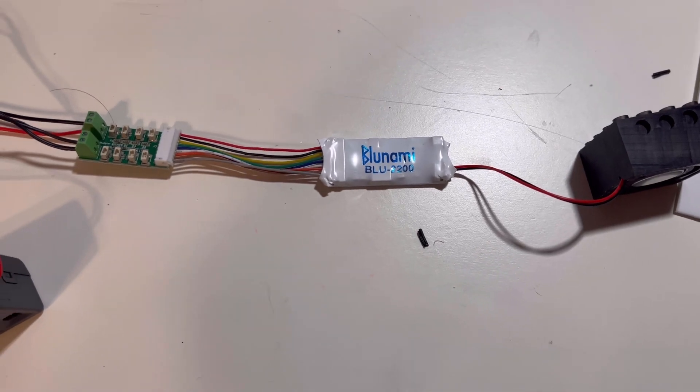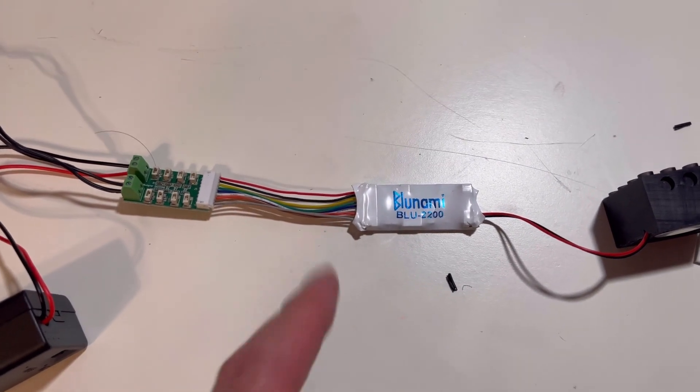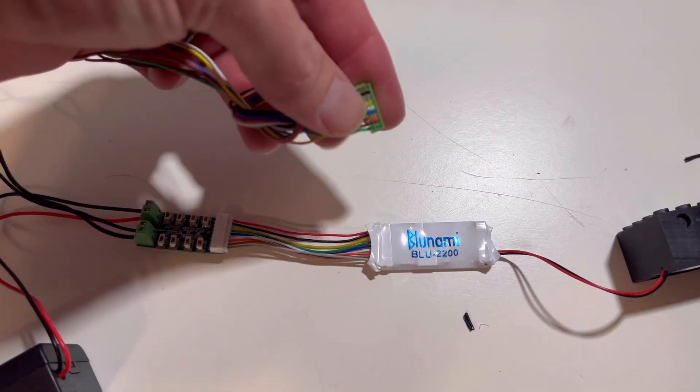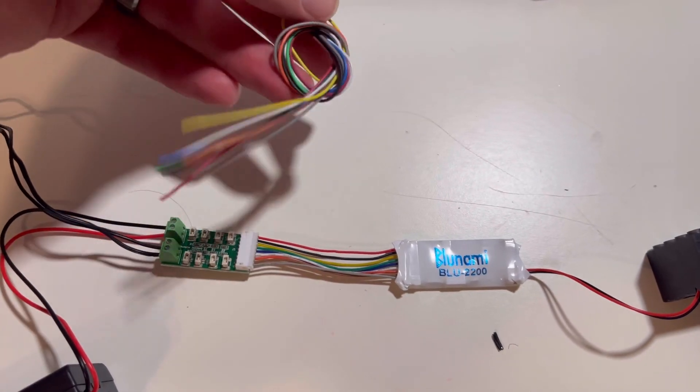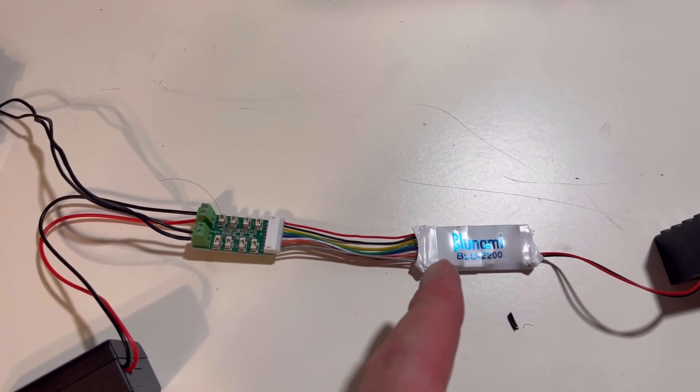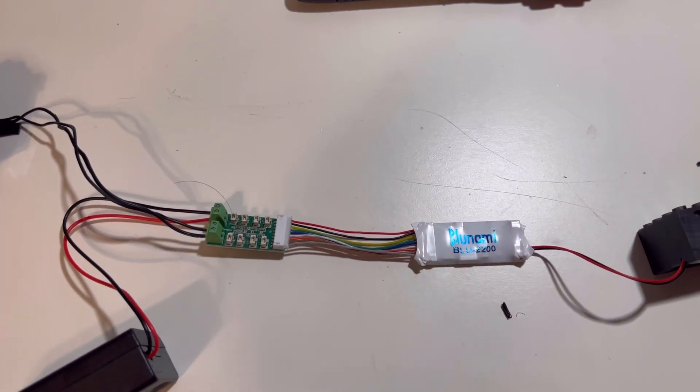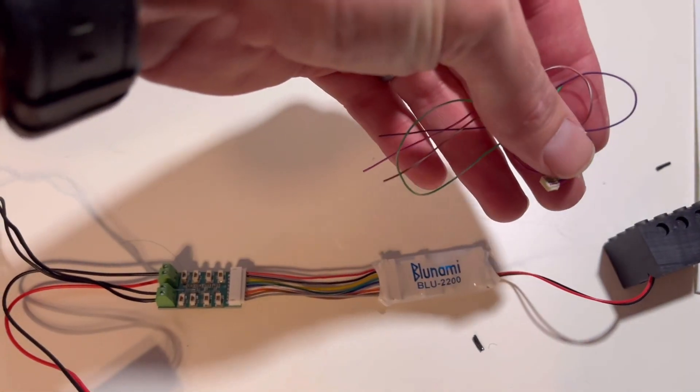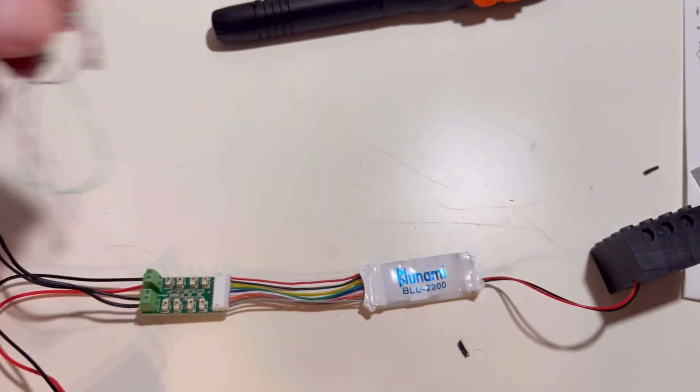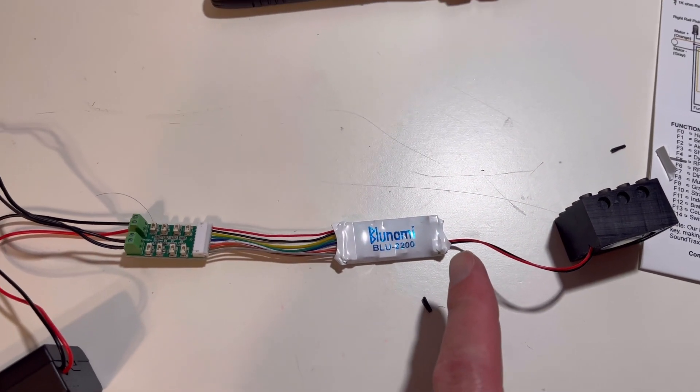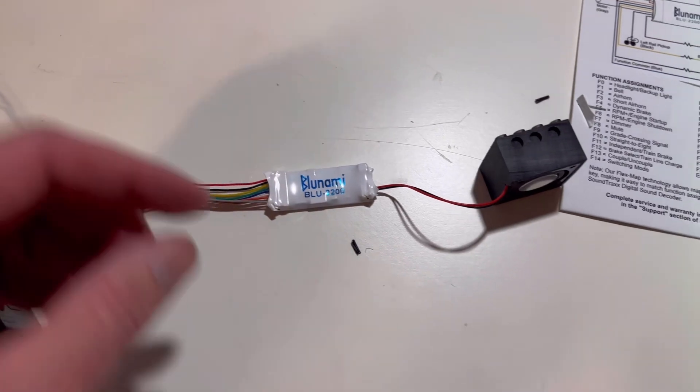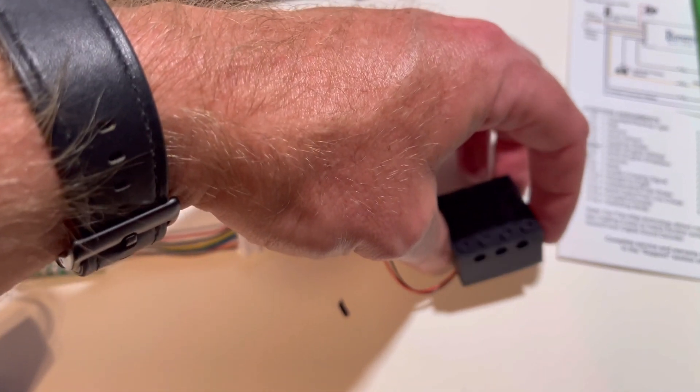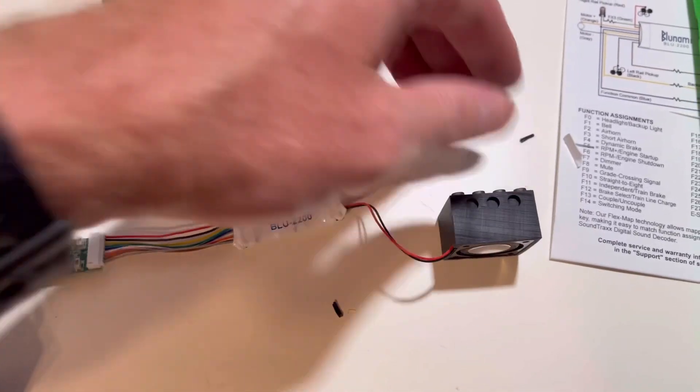As you can see, here's our Bluenami decoder. I've put the LifeLite adapter board on. All that consists of is disconnecting the original wiring harness from soundtracks and plugging in the LifeLite adapter board. Same thing on the speaker. You just unplug this original wiring harness as LifeLite has already pre-wired the plug-in for our 28 millimeter speaker. That is inside of our 3D printed speaker housing there.